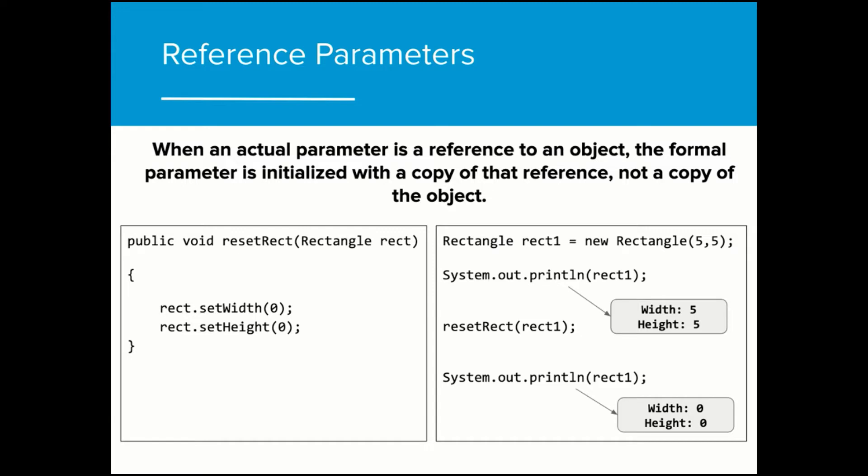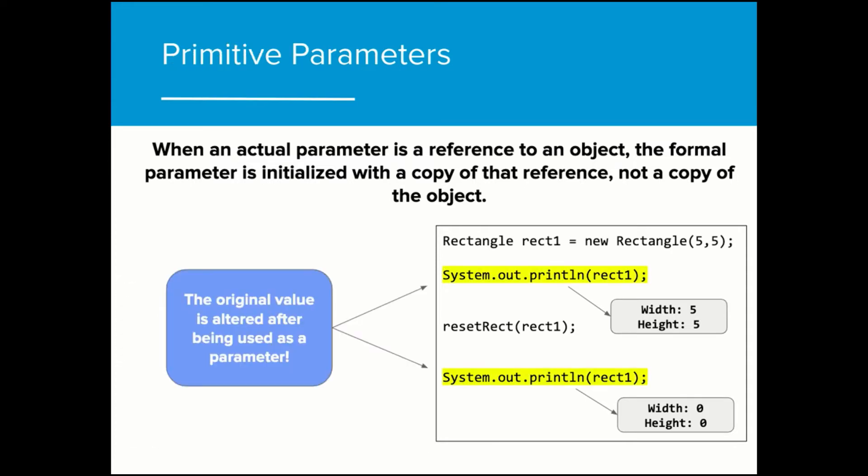While primitive values pass copies to a method parameter, a reference variable will pass a copy of the reference, not a copy of the object. This means that any changes made to a reference variable in a method will affect the original reference. As we see here, the original value of rect1 changes after rect1 is passed through resetRect. This is because the formal parameter rect in the method resetRect is a copy of the existing reference, making an alias of the actual parameter that is being passed.